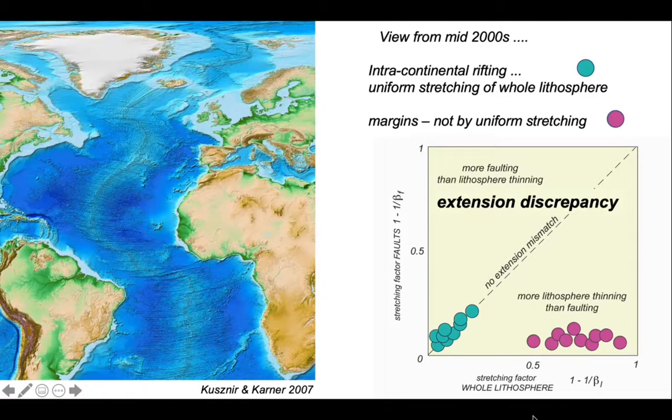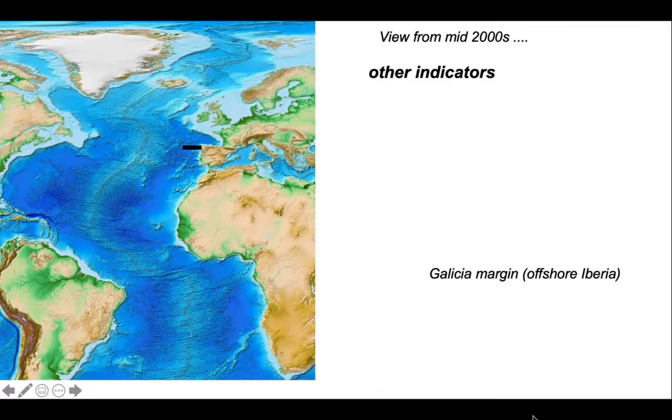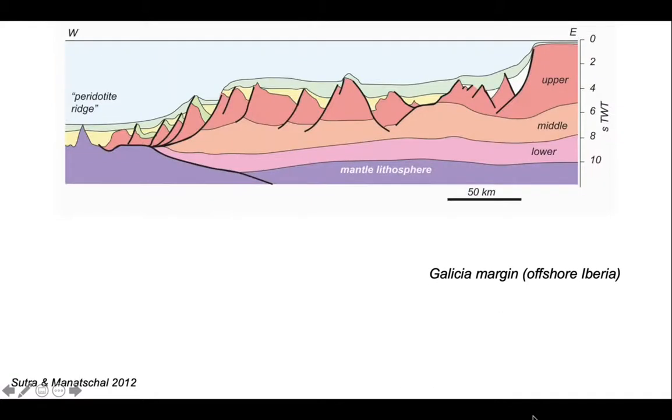Let's now go to another part of the Atlantic, offshore Galicia. Here is an interpreted seismic section through that margin showing a series of tilt blocks down-throwing towards the Atlantic on the left, towards the west, involving the upper crust.